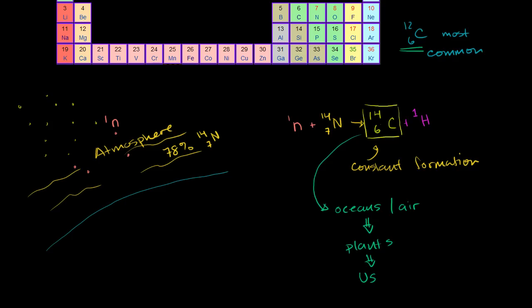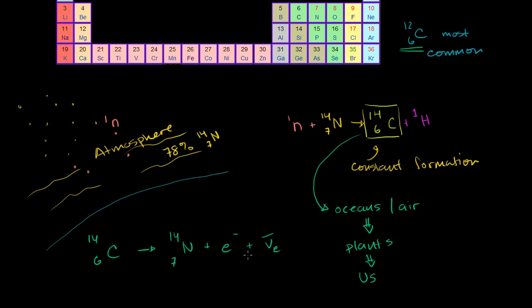Once you die, you're not going to get any new carbon-14. And the carbon-14 that you did have at your death is going to decay via beta decay back into nitrogen-14 — so this process reverses. It'll decay back into nitrogen-14, and in beta decay you emit an electron and an electron anti-neutrino. Essentially what's happening is one of the neutrons is turning into a proton and emitting this stuff in the process.